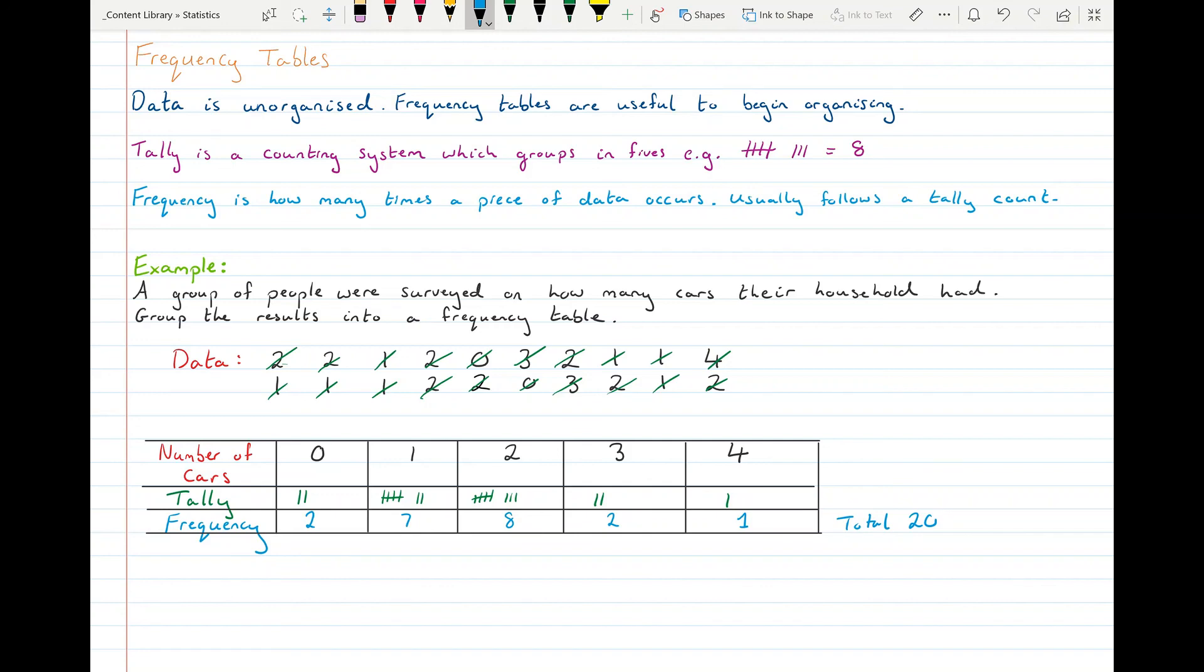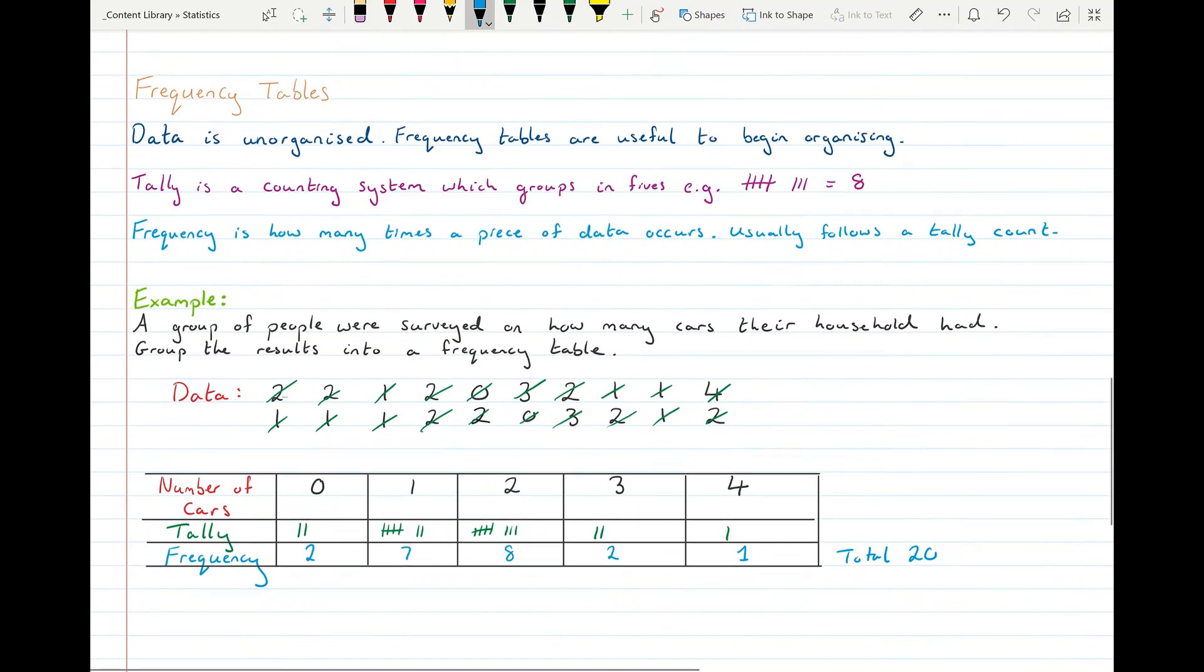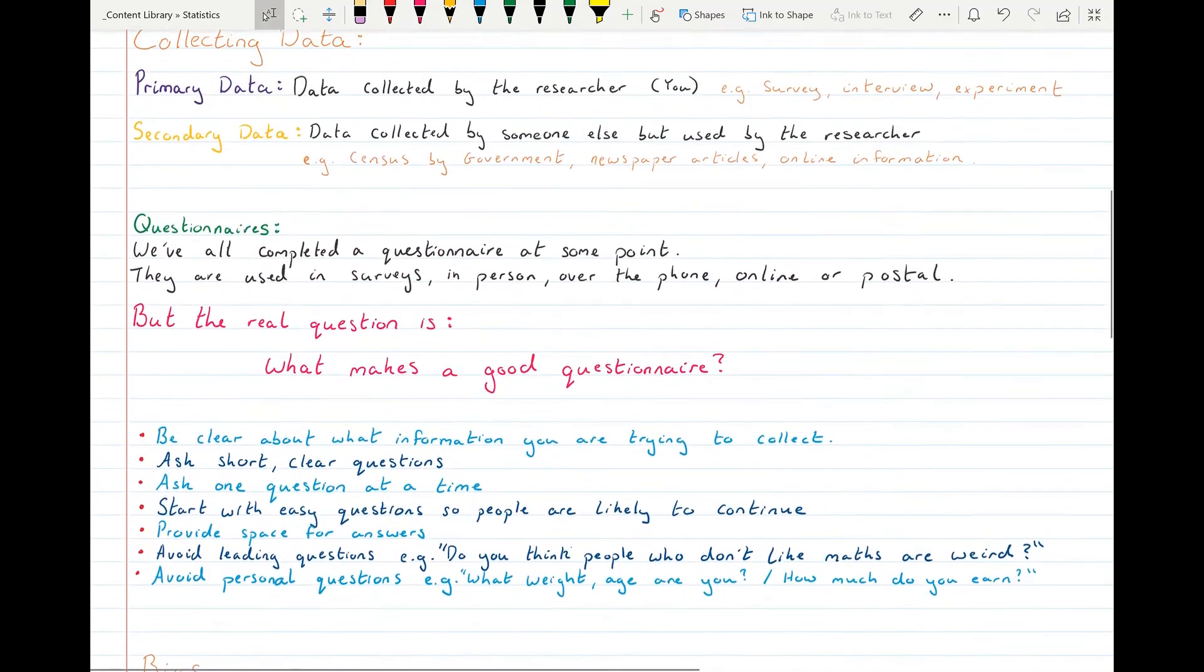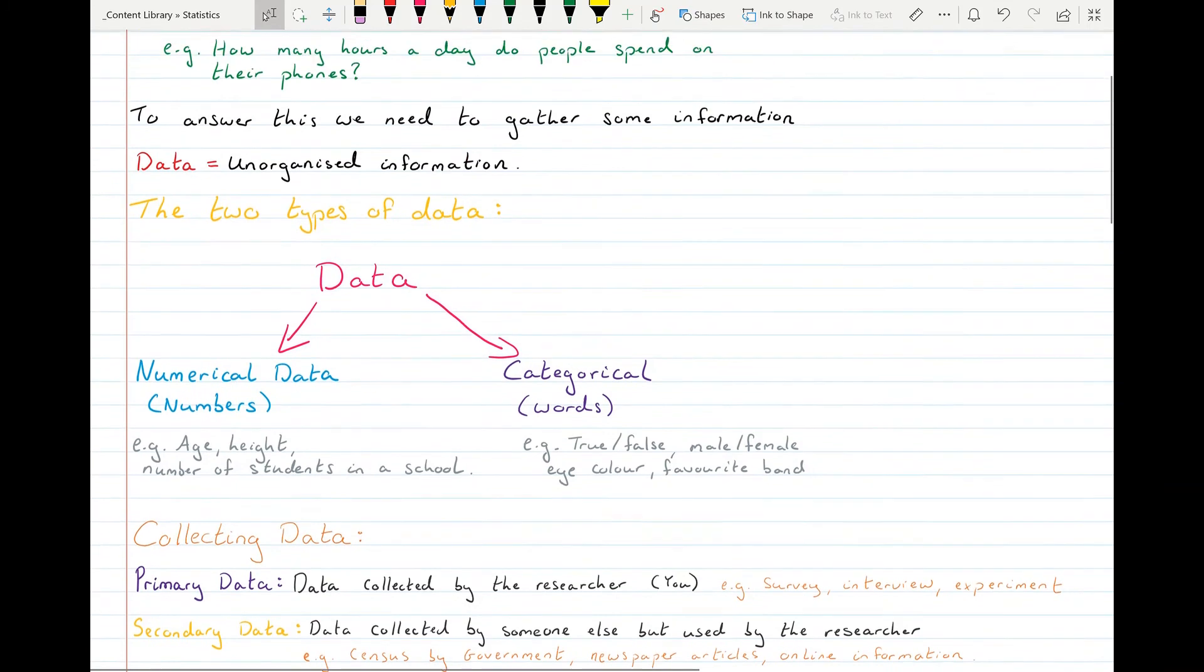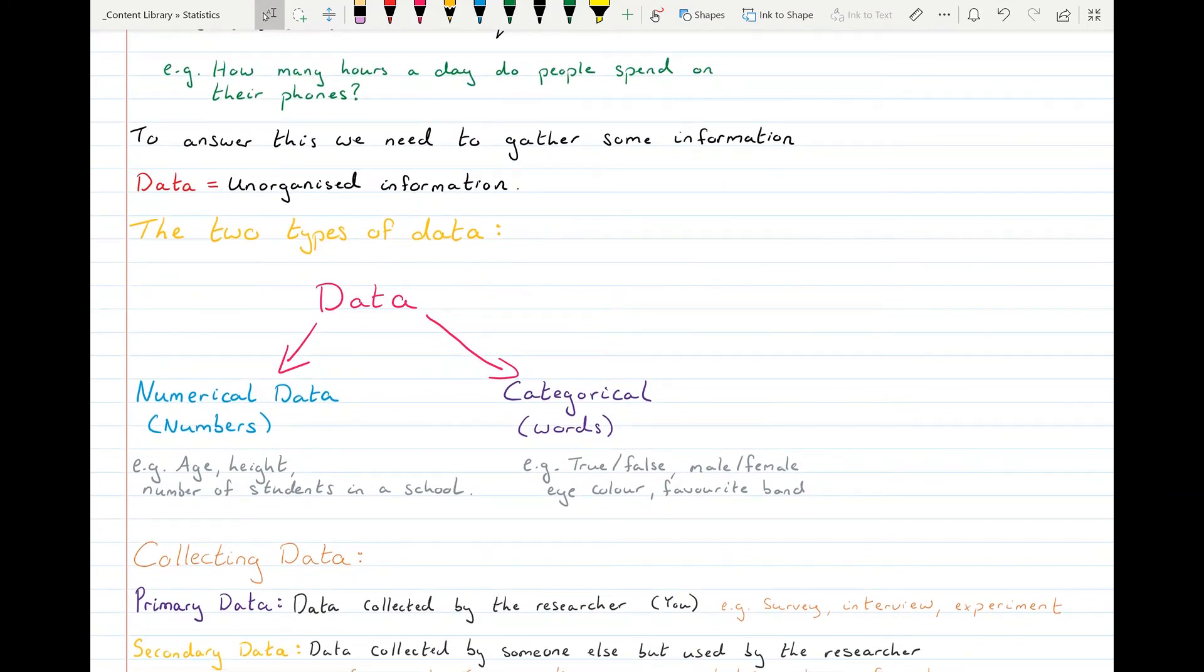And that gives me a total of 20 families surveyed. So that's statistics. Data entry, data collection. It's important that you're able to fill in a frequency table, identify bias, and know the two types of data. Hope you found it useful.